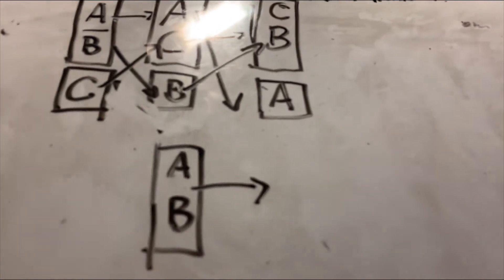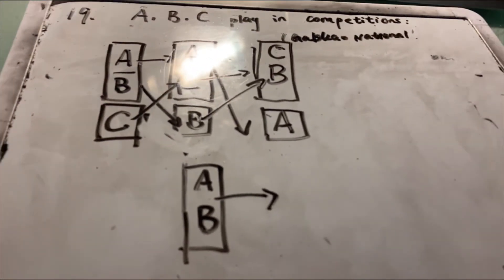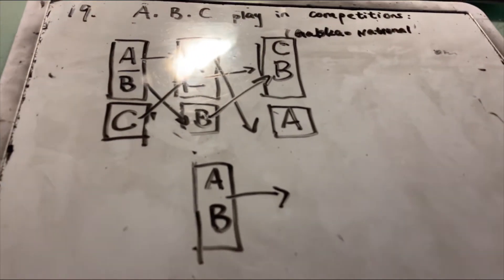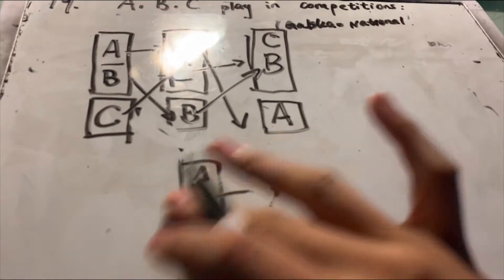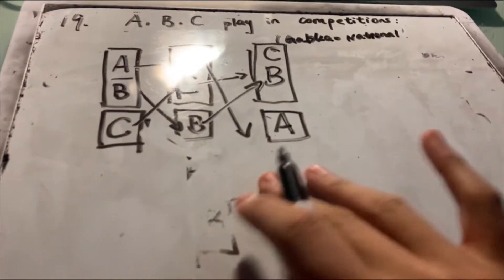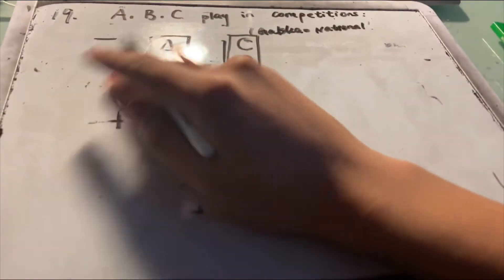The person who is not eliminated in the previous round is the winner. That's the basic game rule. After hearing it, you may find it is difficult to understand, so I'm going to use an example to explain it.